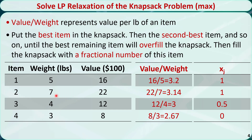After that, we cannot put item 3 wholly into the knapsack because it will overfill. We can put only half of item 3 in the knapsack to fill the remaining capacity of 2 pounds. So x3 is equal to 0.5.